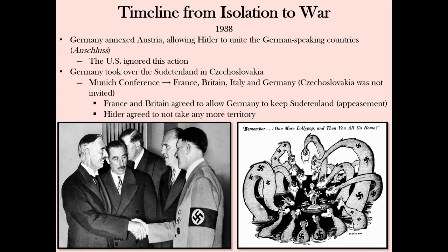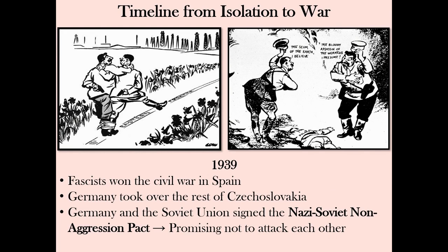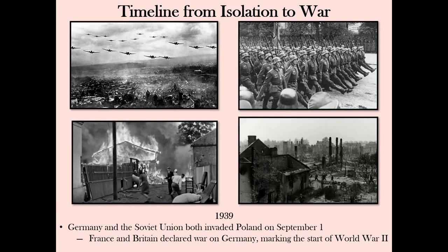A Dr. Seuss cartoon on the right shows Nazi snakes being told they can only have one more lollipop by the appeasers. Before the invasion of Poland in 1939, which marked the start of World War II, Franco's fascist forces won the Spanish Civil War, Germany broke its Munich agreement and took over the rest of Czechoslovakia, and the Soviet Union agreed to the Nazi-Soviet Non-Aggression Pact — not a military alliance, just a promise not to attack each other. Then on September 1st, 1939, Poland was attacked by Germany from the west and the Soviet Union from the east. The German Blitzkrieg, or Lightning War, steamrolled Poland. Great Britain and France declared war on Germany, and the sequel to the Great War had begun.